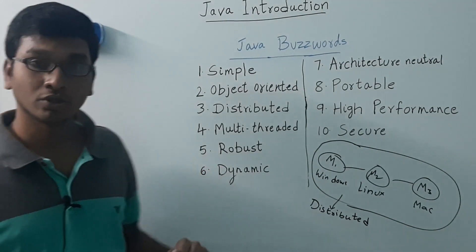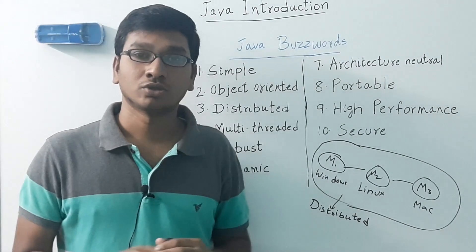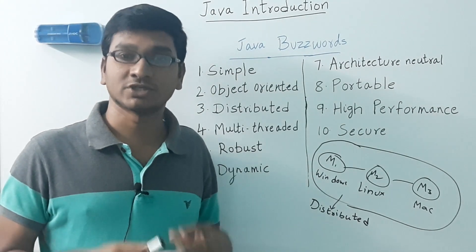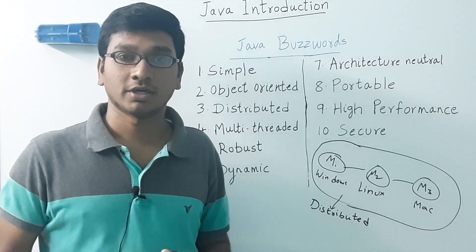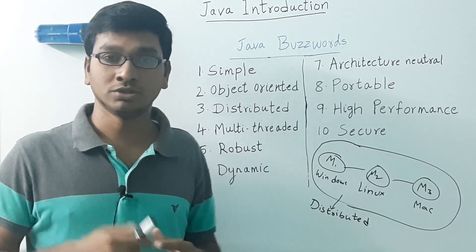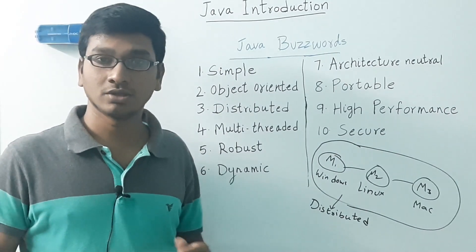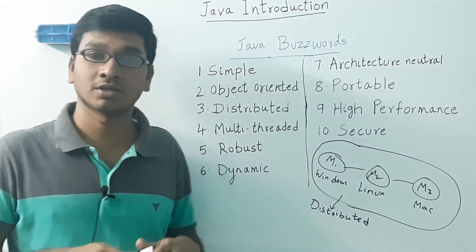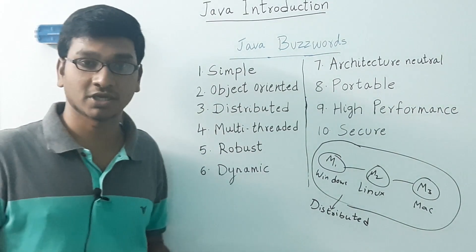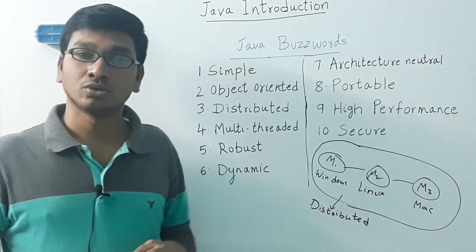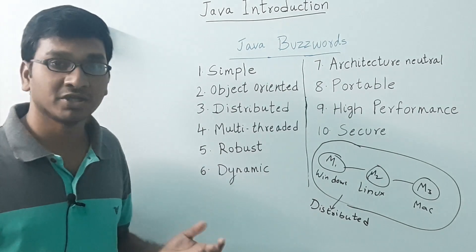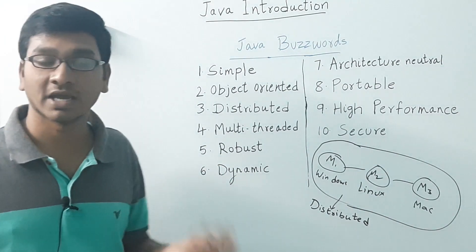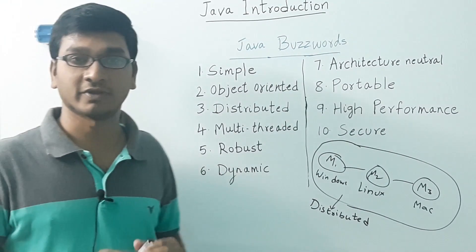Next is robust. The meaning of robust is strong. Java has extensive compile-time checking as well as runtime checking, which makes it the choice for creating highly reliable software.